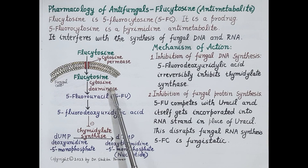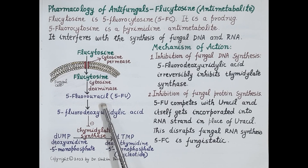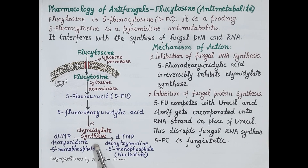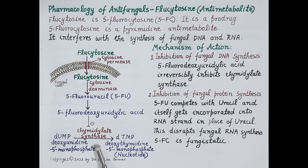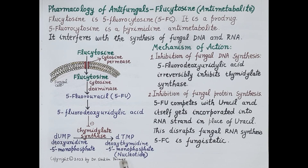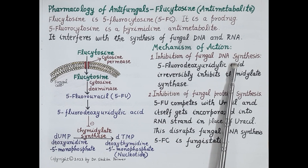This enzyme, cytosine deaminase, is found to be absent in human beings. 5-fluorouracil is further converted into 5-fluorodeoxyuridilic acid, which irreversibly inhibits the enzyme thymidylate synthase. Thymidylate synthase is very essential for the synthesis of deoxythymidine 5-monophosphate, which is a thymine nucleotide incorporated into DNA. So inhibition of this thymine nucleotide synthesis inhibits fungal DNA synthesis.